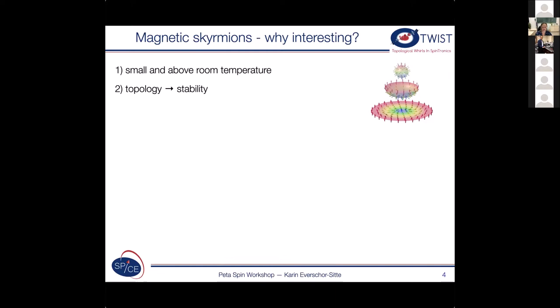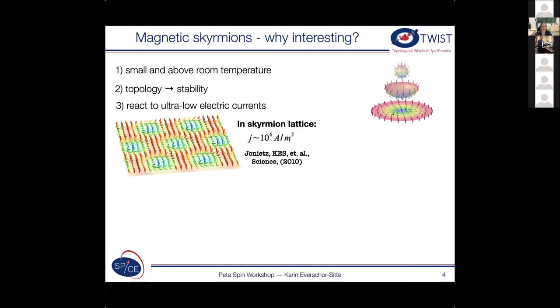What we have shown quite early on, so this was work during my PhD thesis time, that actually when you take a lattice of them that they do react to very low electric currents. So 10 to the order of 6 versus like 10 to the order of 11 ampere per square meter that you need for moving domain walls. Of course if you want to move a single of them then also the current density is higher.